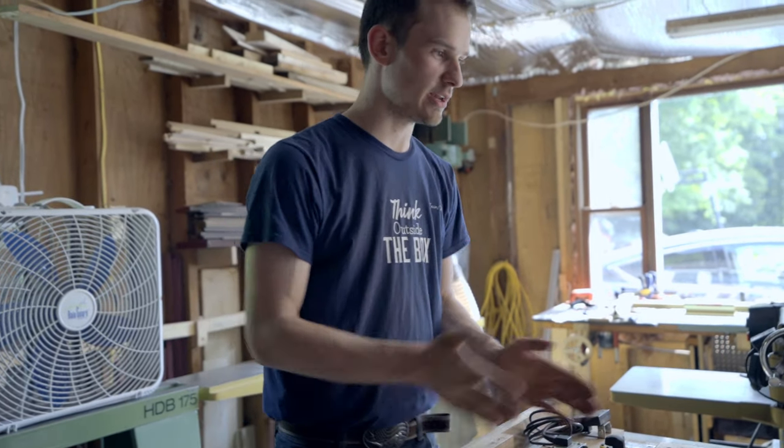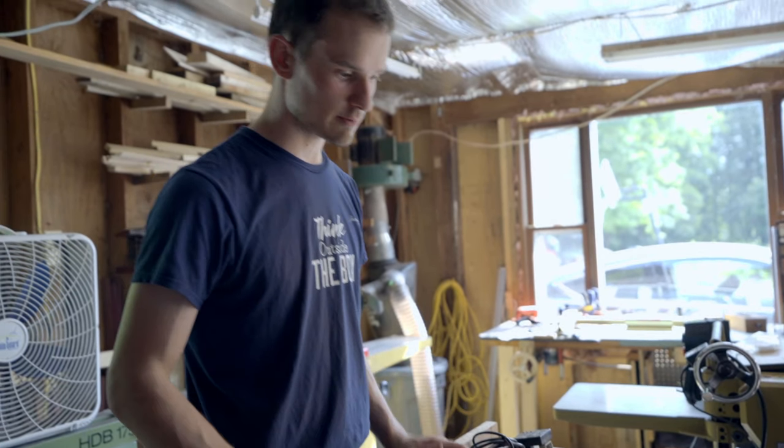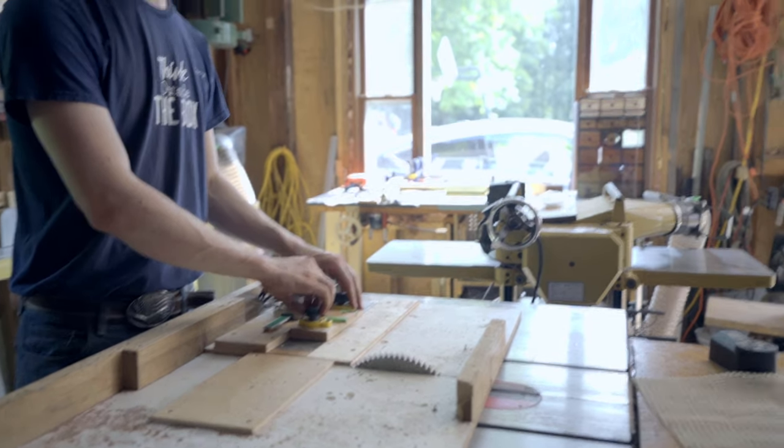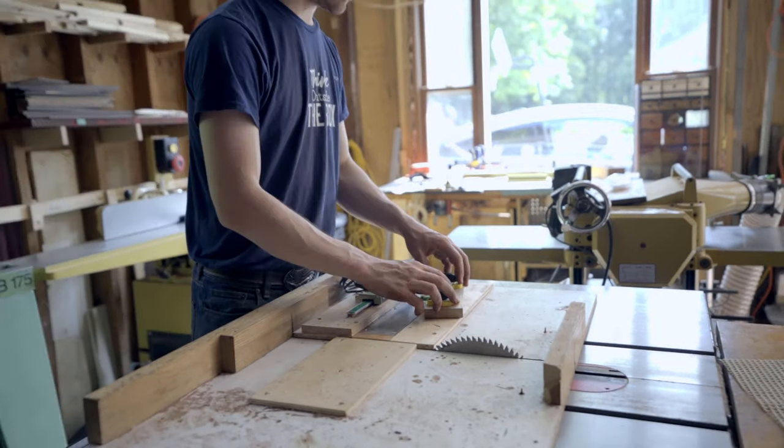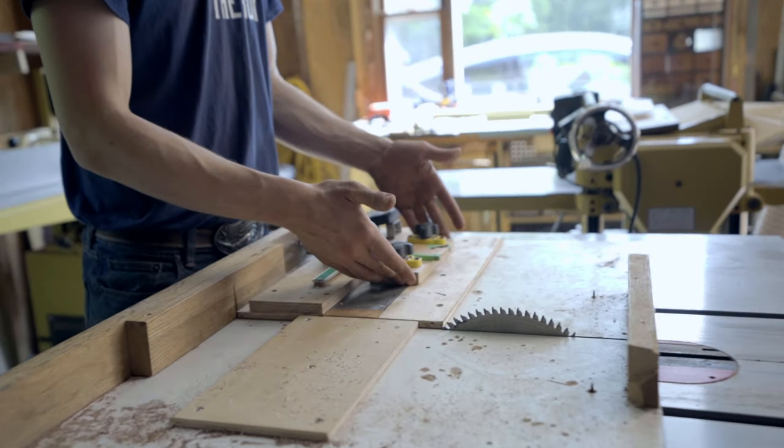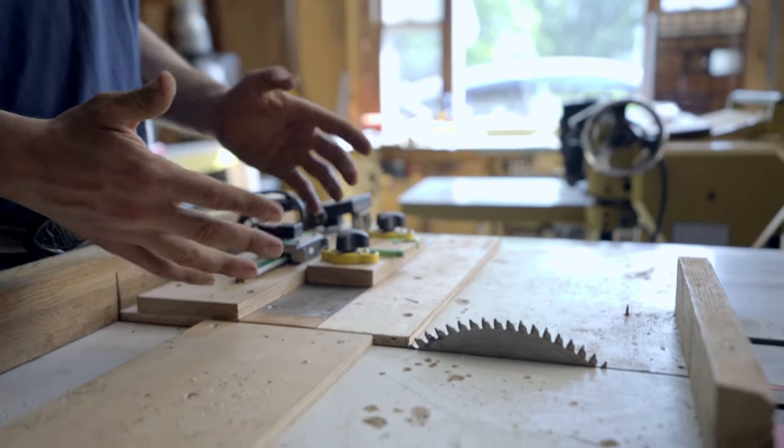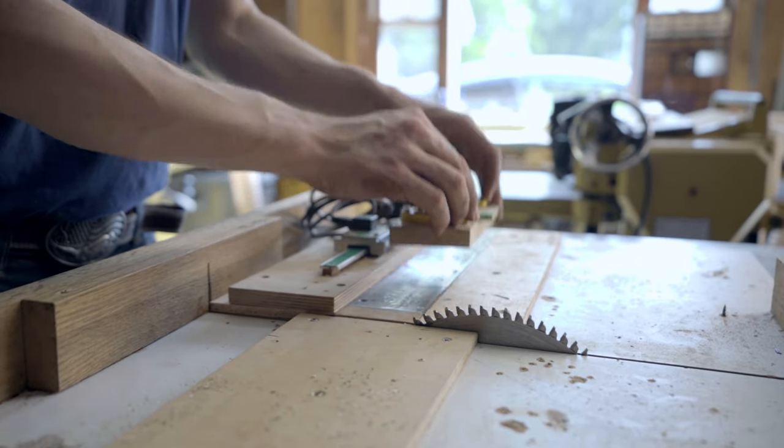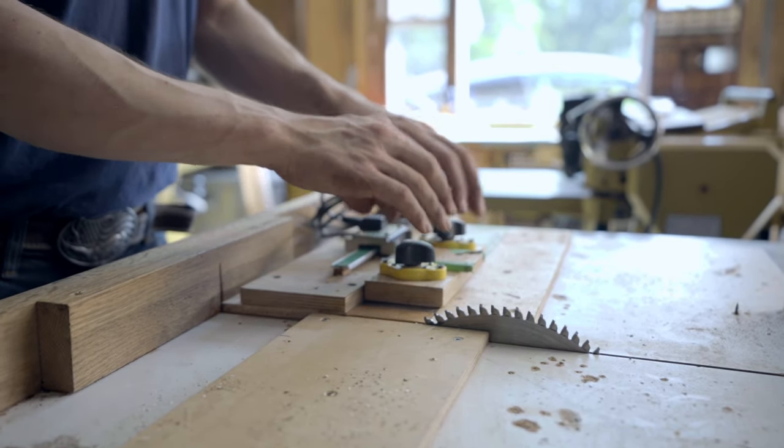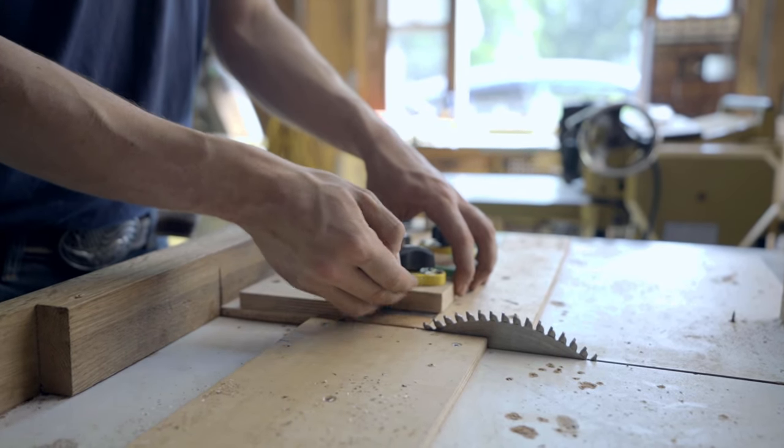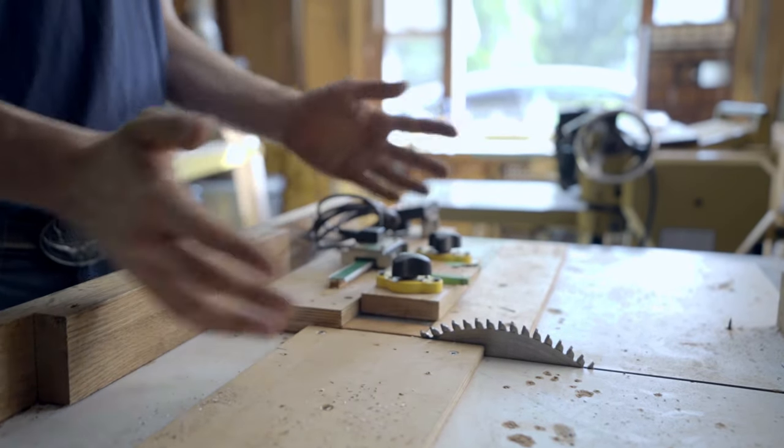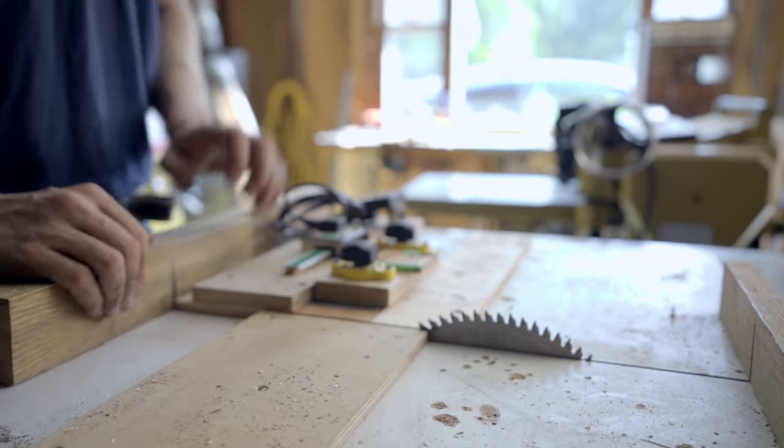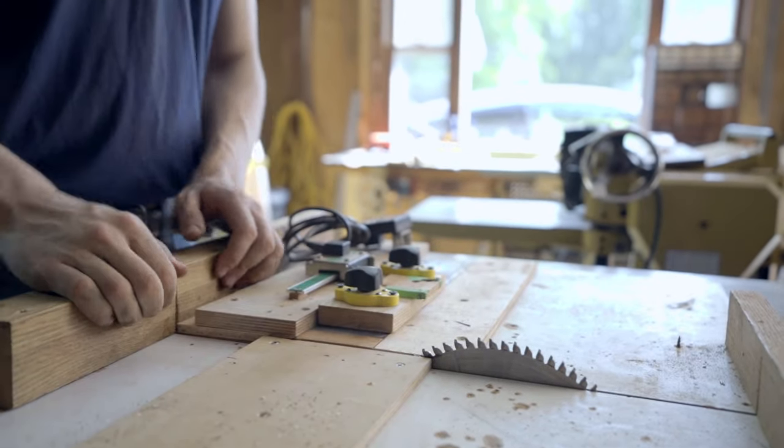First off, let's start with this table saw sled which I made myself. The thing I really like about it is it's got two magnetic turnbuckles here holding this work stop. I was always getting frustrated with other table saw sleds that you had to manually move the stop every time and tap it with a hammer. This one's super easy - you just turn two magnetic turnbuckles and now you've got a rock-solid stop.